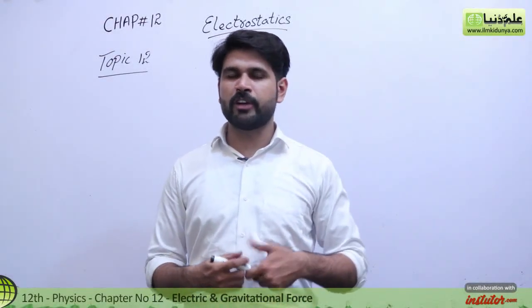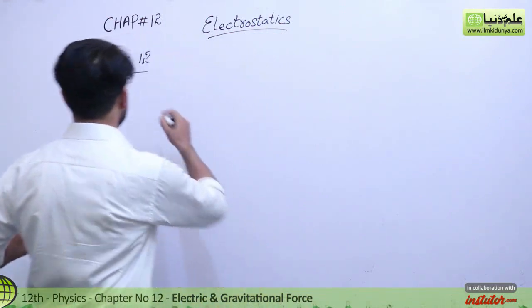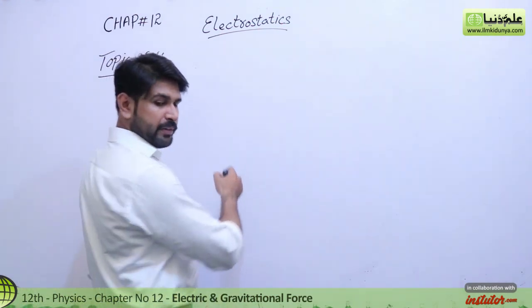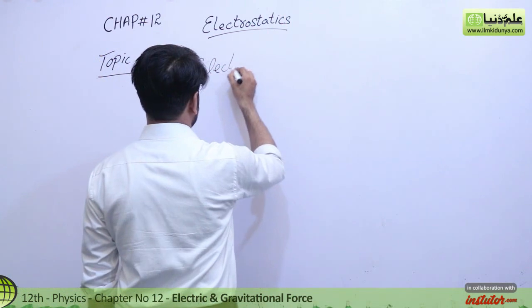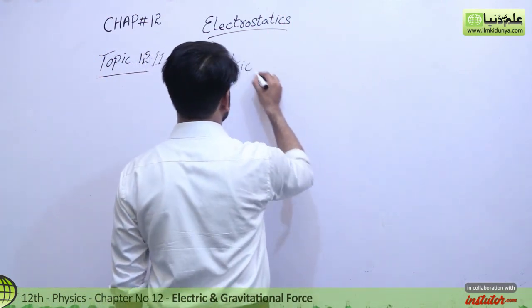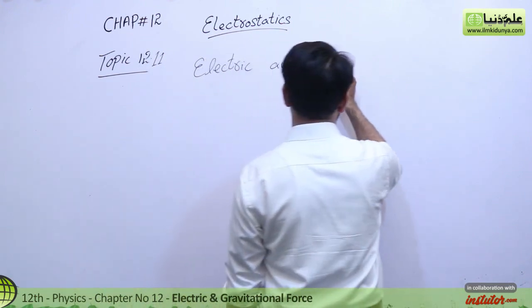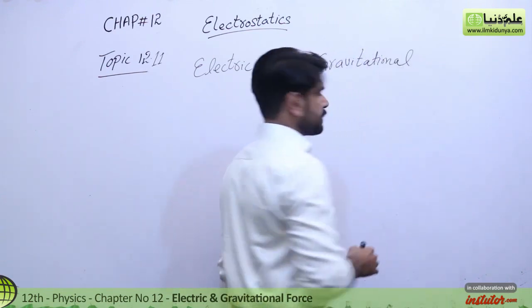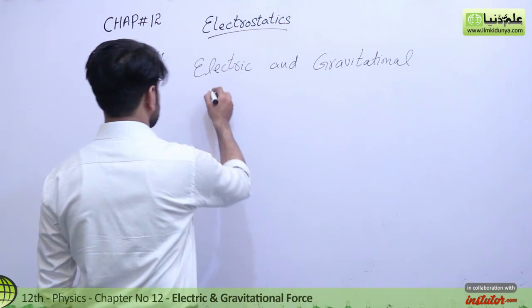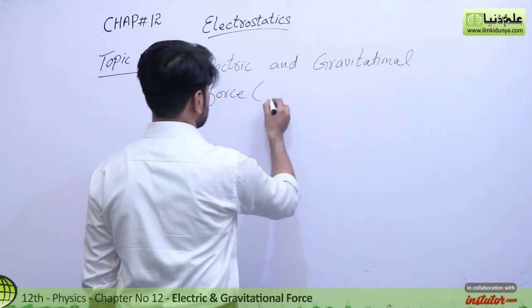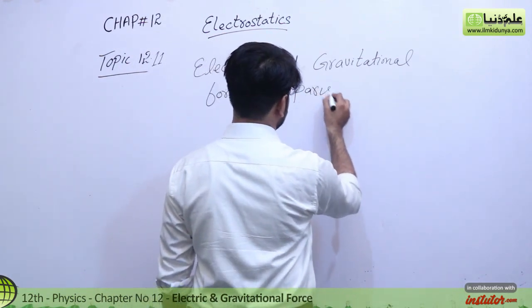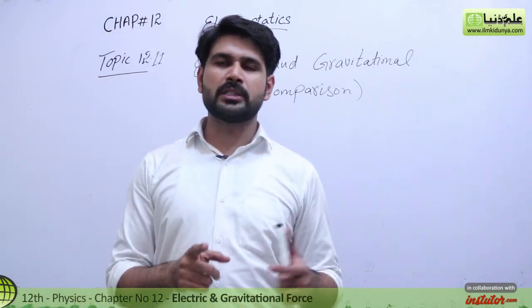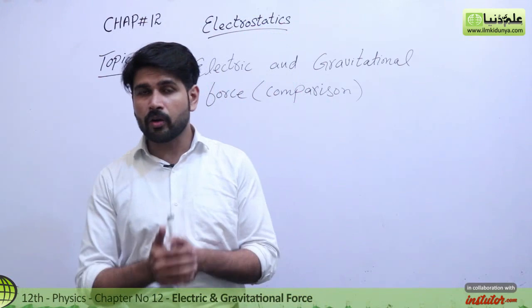The last topic we covered was 12.10. The next topic we want to do is 12.11, whose name is 'Electric and Gravitational Forces.' This is actually a comparison between two forces — or two laws: number one is Newton's Gravitational Law, and number two is Coulomb's Law of Electrostatics.